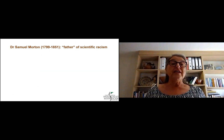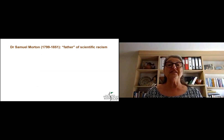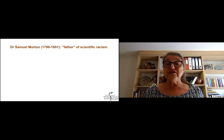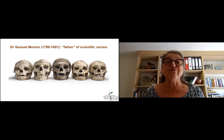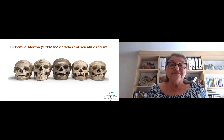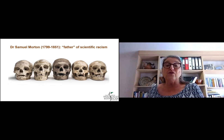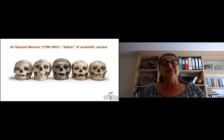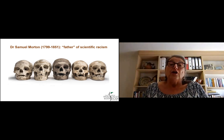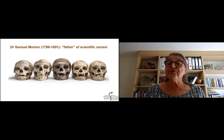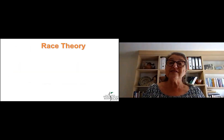Moving along, we come to Dr. Samuel Morton, who lived from 1799 to 1851 — already in the 19th century. He claimed you could prove that different kinds of people have different brain sizes and therefore some are better than others. He took skulls and filled them with mustard seeds, then measured the weight to prove some skulls hold more than others. Of course, the skull that held the most belonged to a European — a white-skinned person from Europe or Britain. And so you see how the notion of race and racism starts to take root.